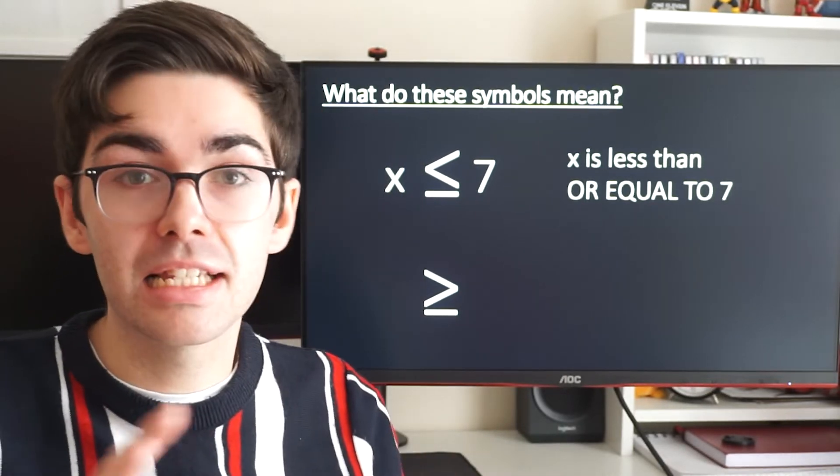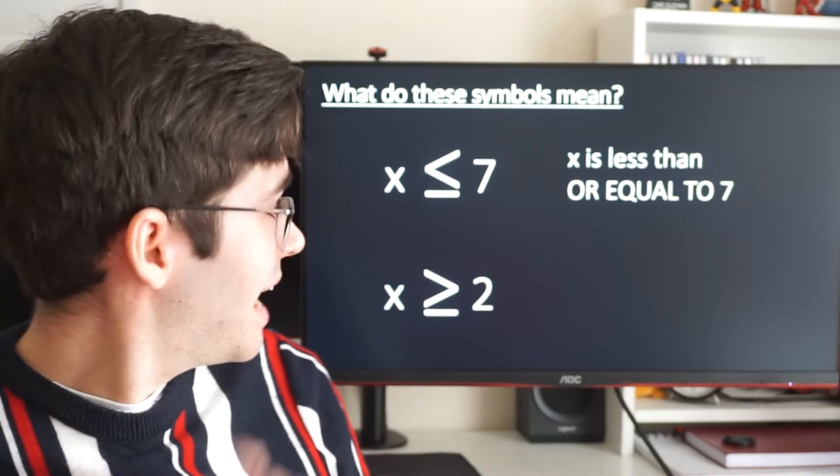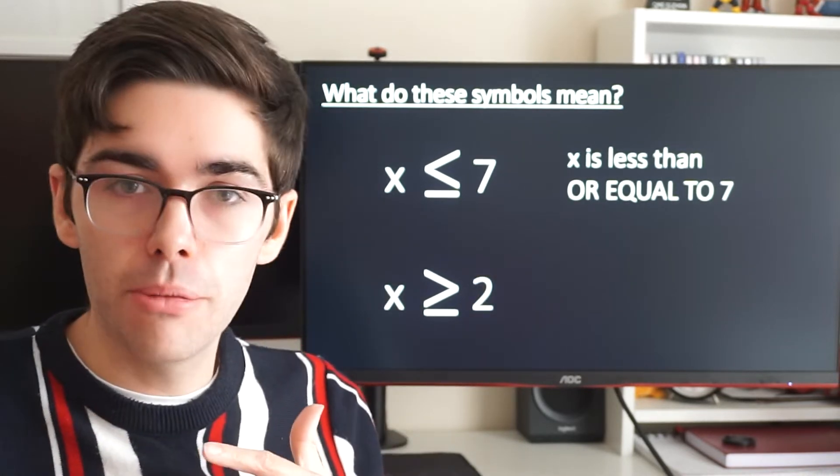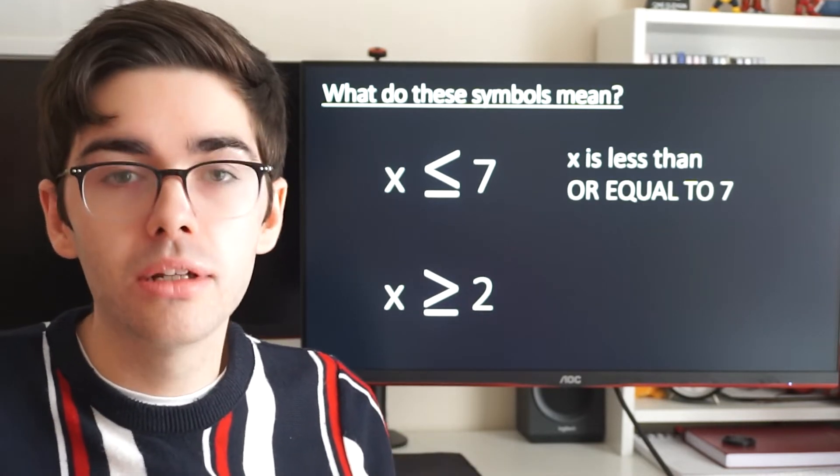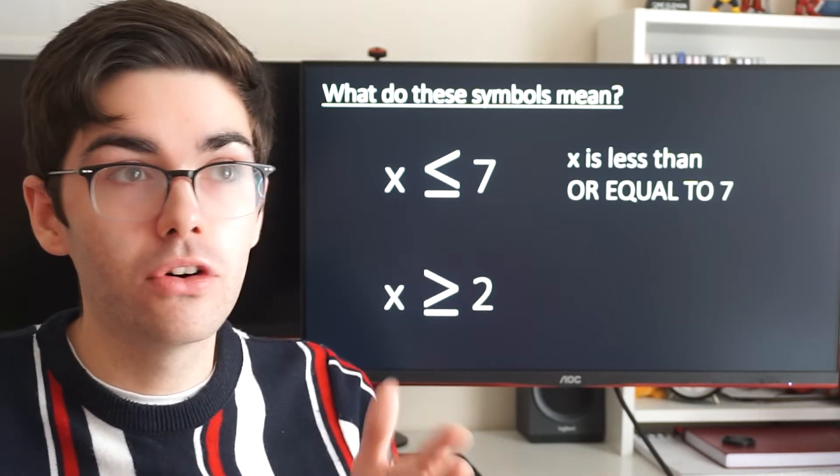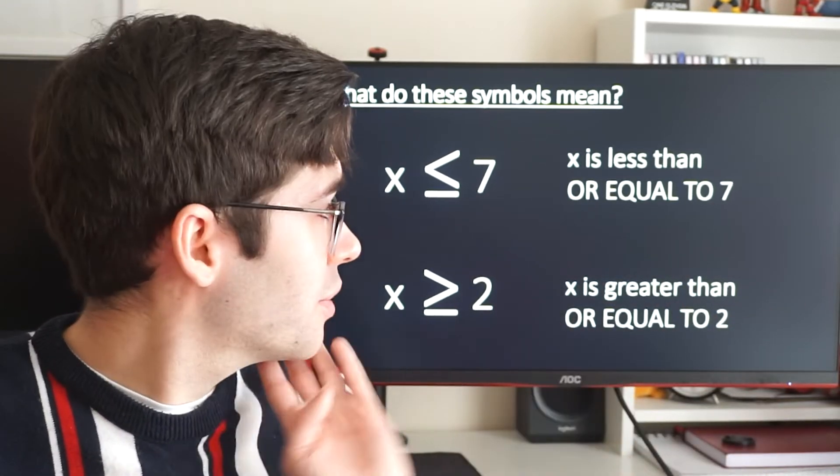Next one, x, that symbol two, this is going to be the opposite. X is greater than, bigger than, or equal to two. So x could be two, three, four, five, six, and so on and so forth. And that's what those symbols mean.